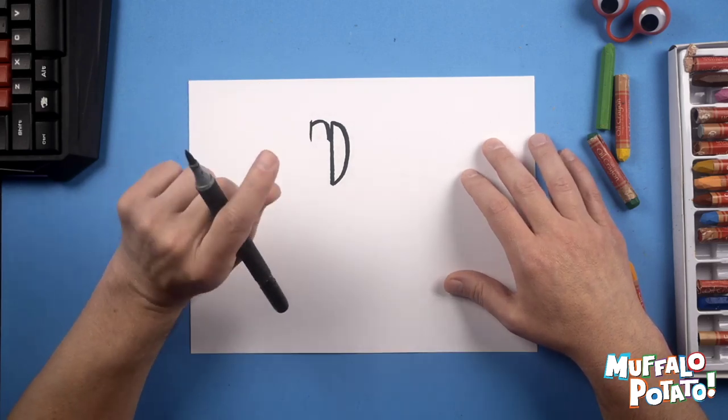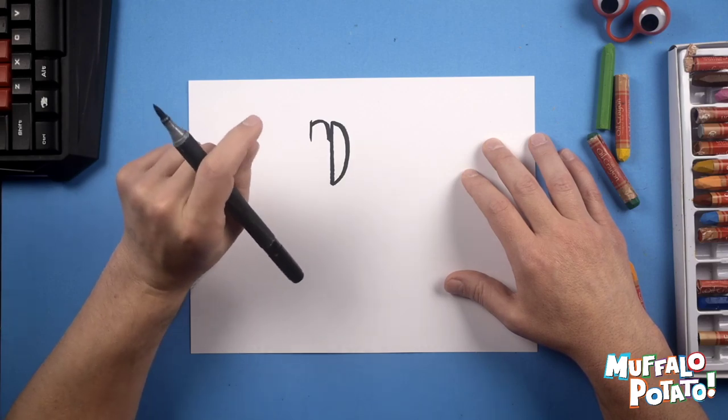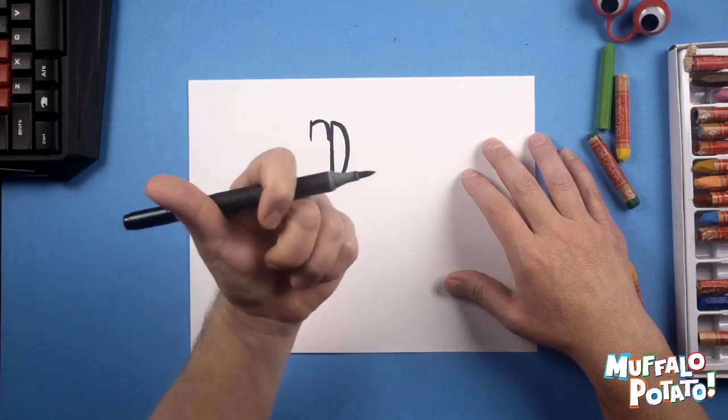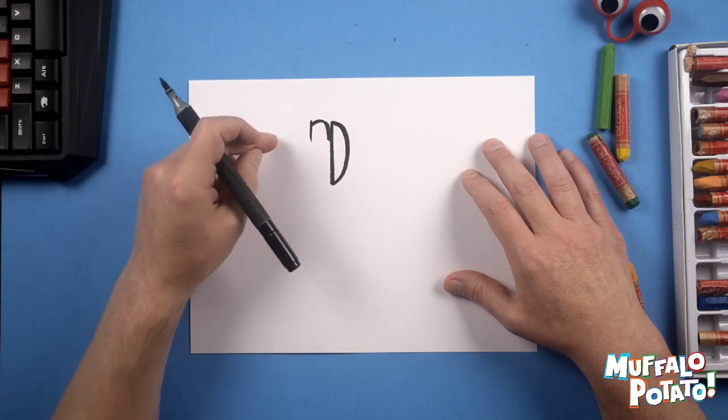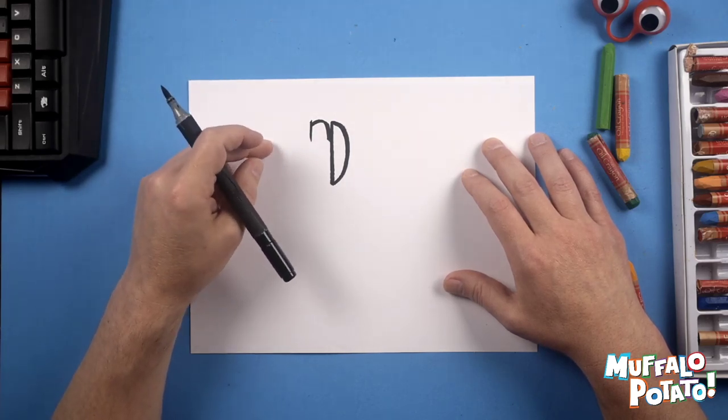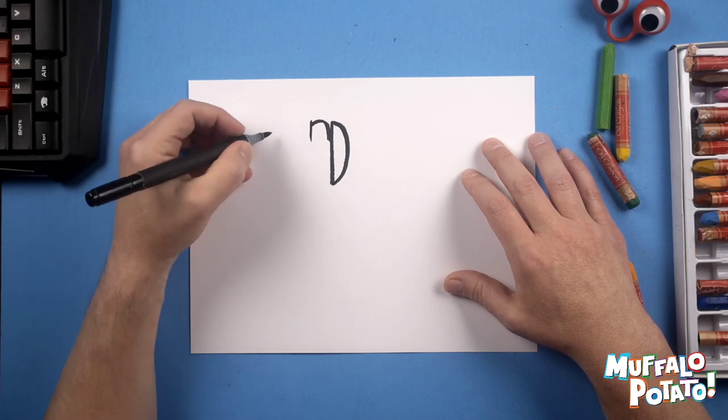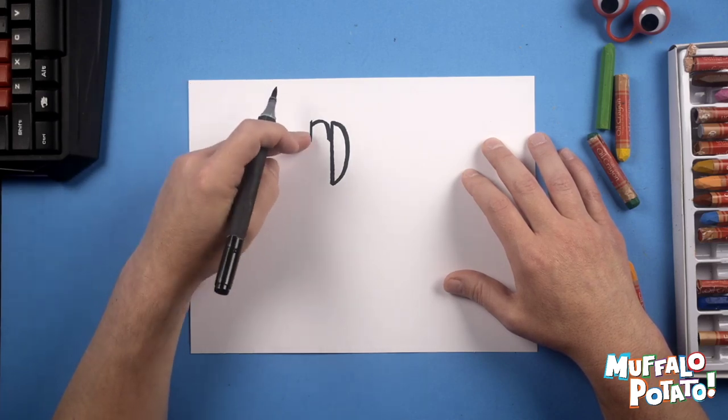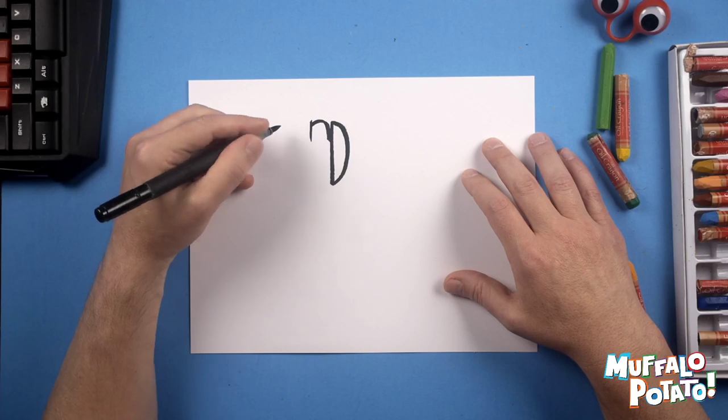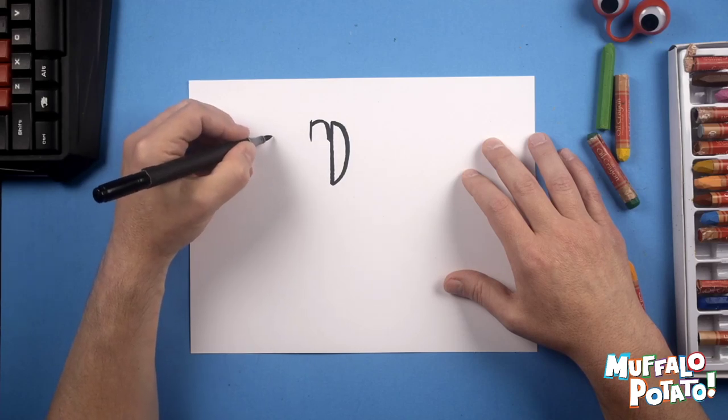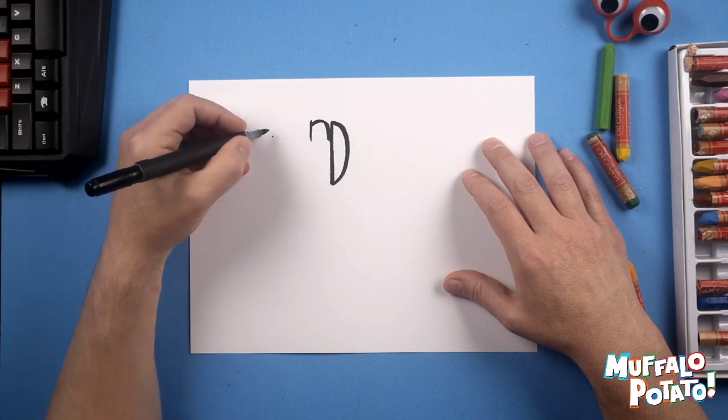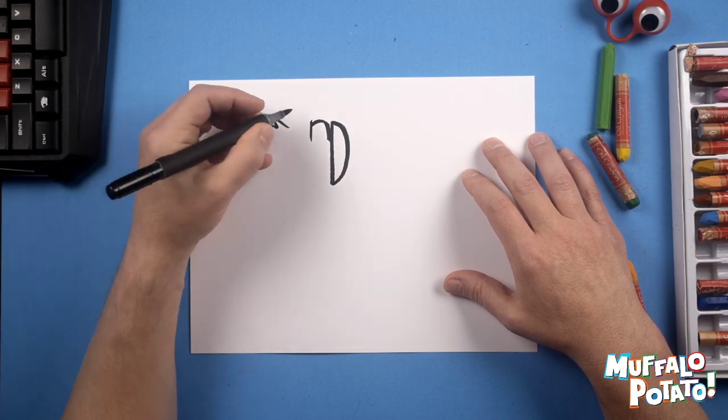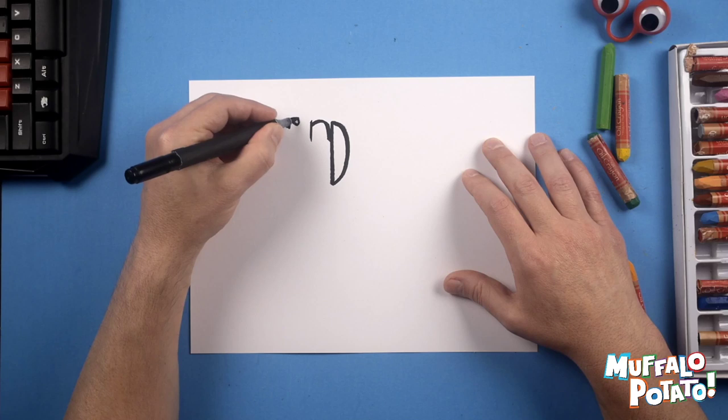Now I want you to draw a couple pointy capital M's, very thin, kind of leaning at an angle this way. They're just two pointy capital M's about two letter N's away. They start right here. Don't make them big, but make sure they're pretty much on the same level as this N. We'll do one M like this, and another M like that.